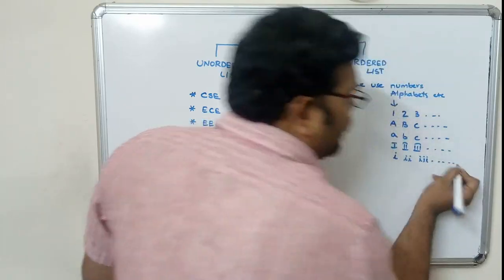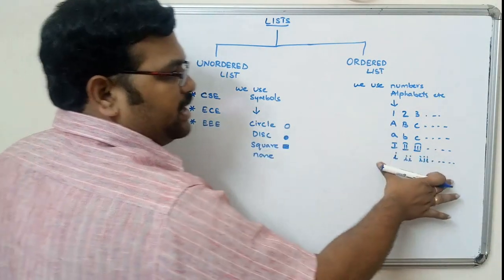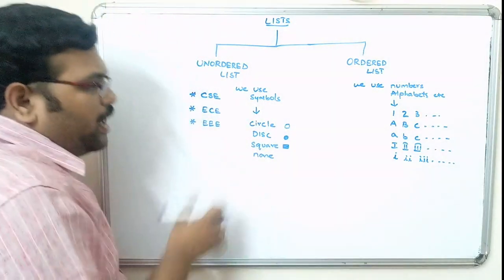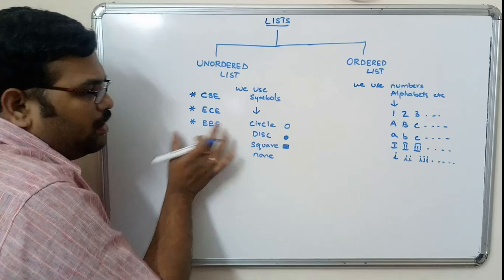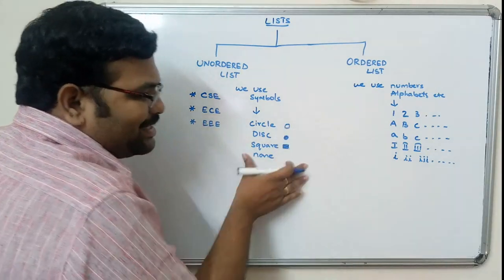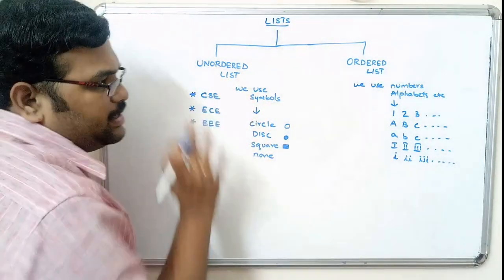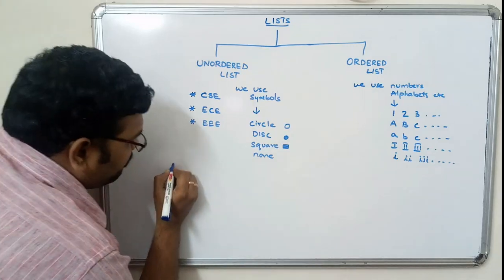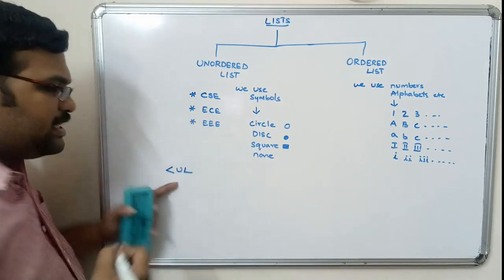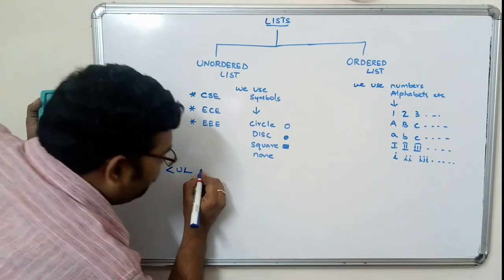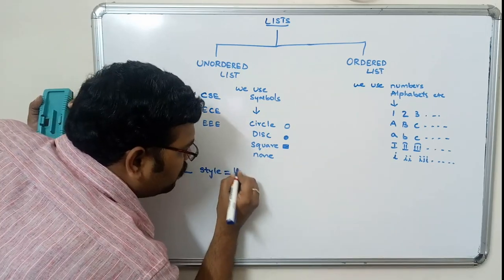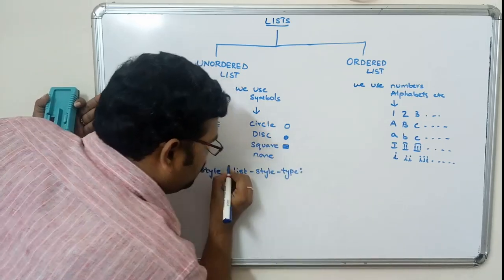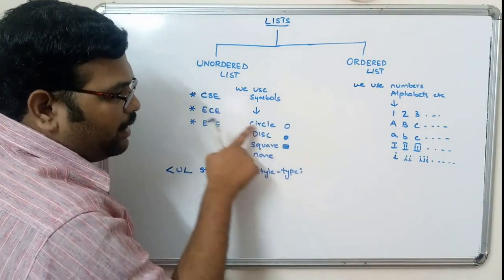So in this way we can represent data. If we represent data using these types — numbering or alphabets — we call it an ordered list. If we use symbols, we call it an unordered list. Now, what is the syntax for creating an unordered list? We use a tag called UL. UL stands for unordered list, and we implement an attribute called style with value list-style-type, followed by a colon and the symbol type — circle, disc, square, or none.